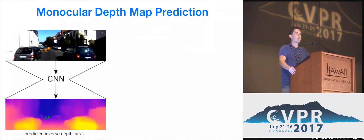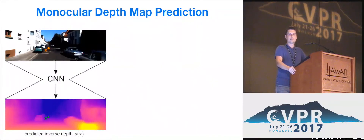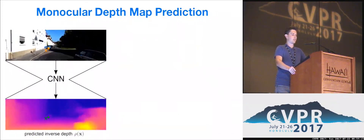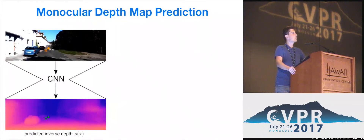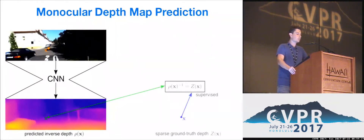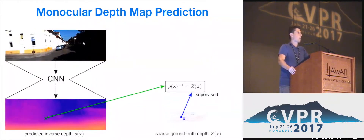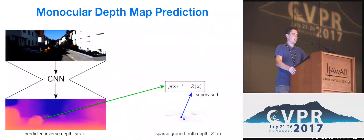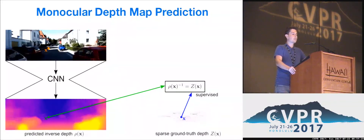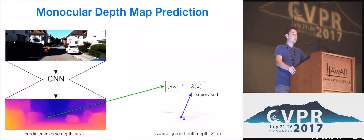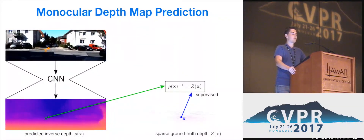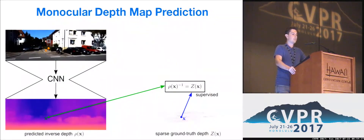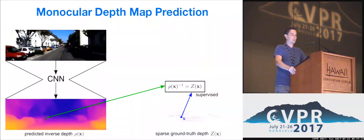One way to use the information about the environment is to enforce the consistency between predictions and the ground truth depth maps obtained by some measuring device, for instance, RGBD cameras or laser scanner. However, ground truth quality often leaves much to be desired, especially in outdoor scenes. In the right bottom part, you can see the ground truth for the popular KITTI dataset, where it is only available for about 5% of the pixels. Moreover, the measurements are totally absent for approximately the upper third of the image.